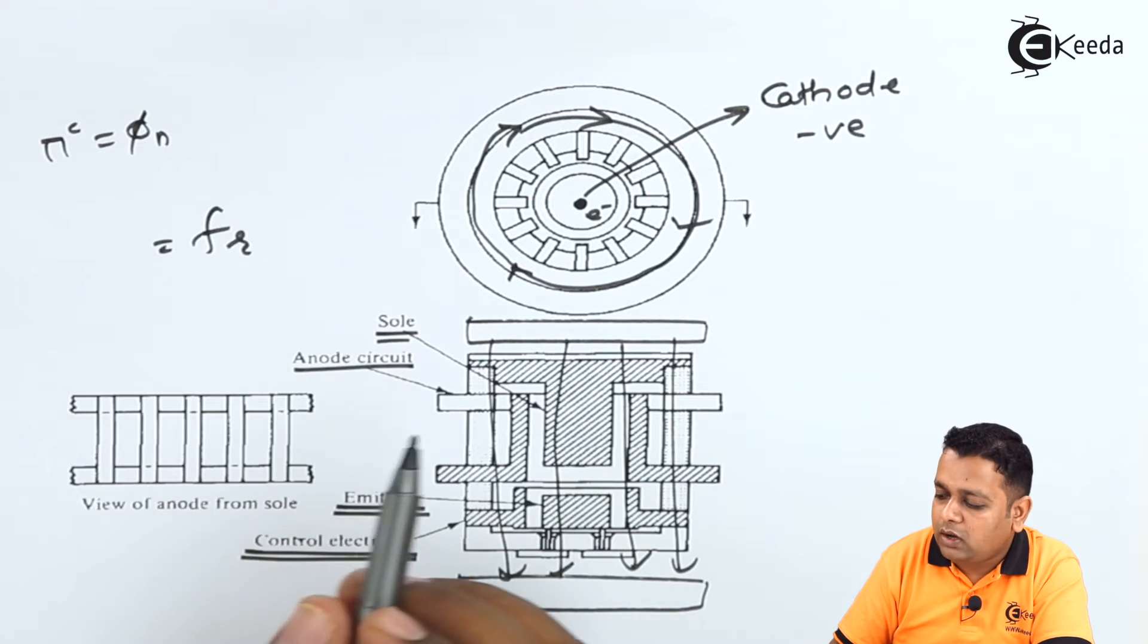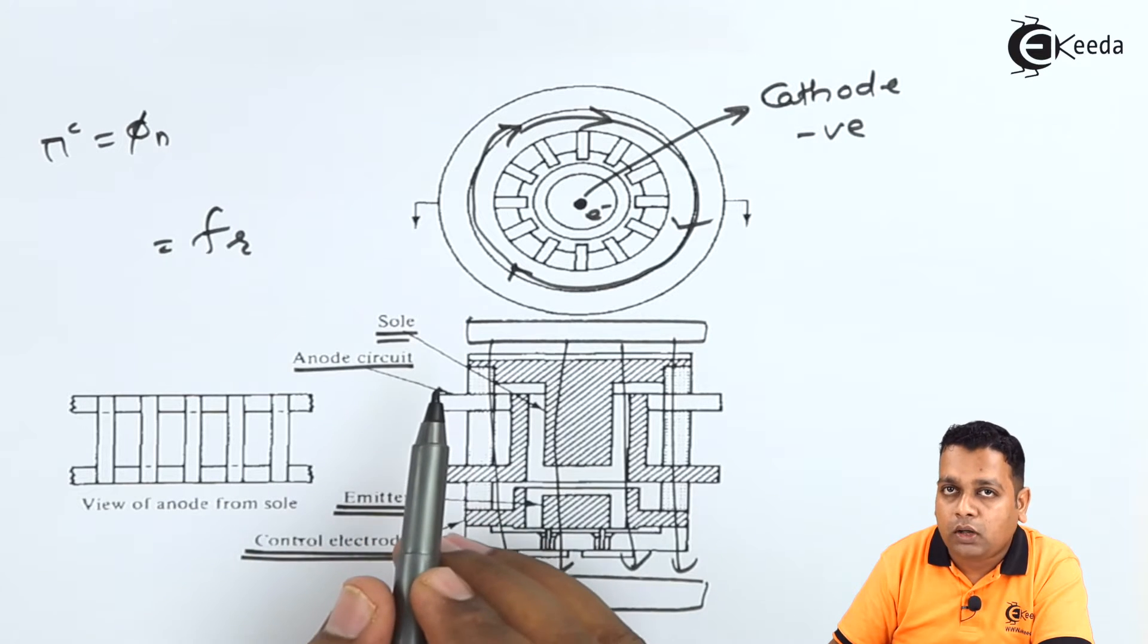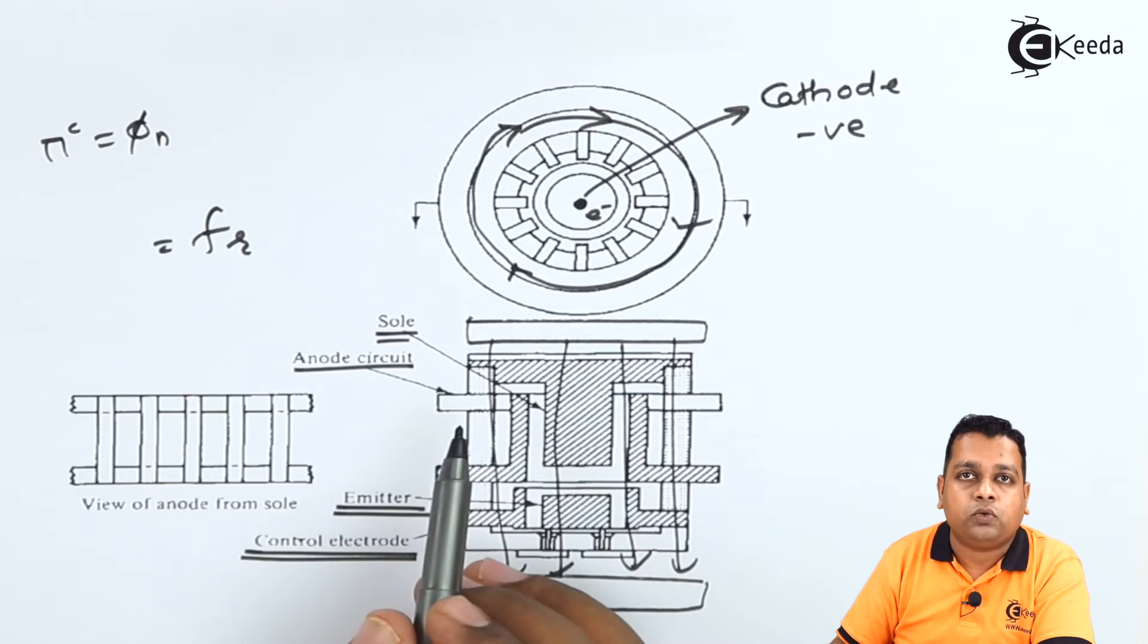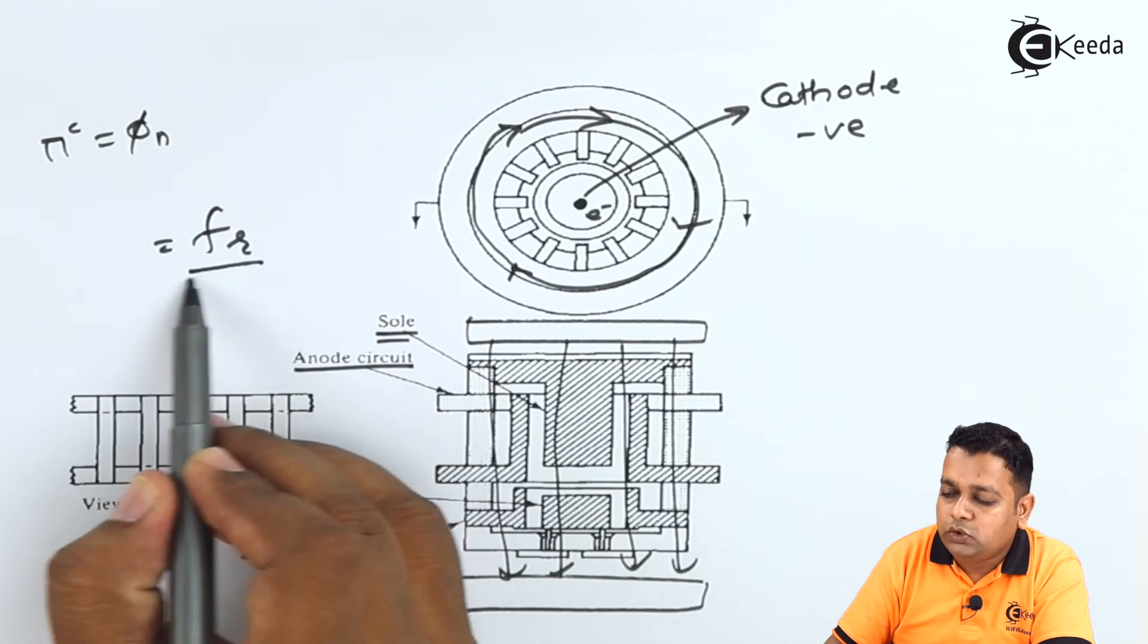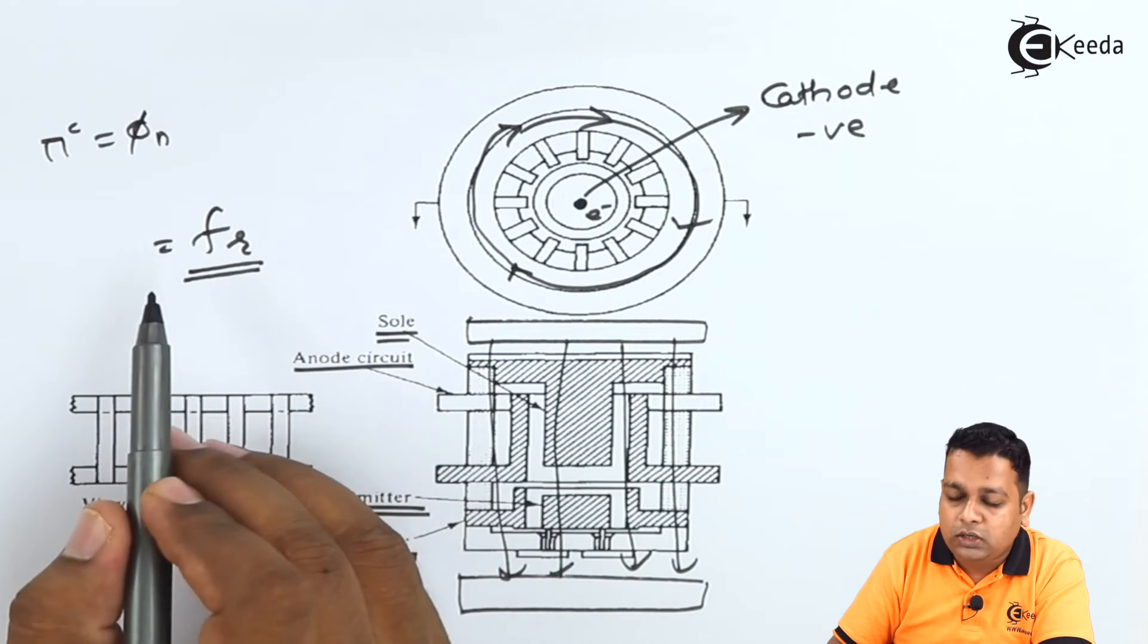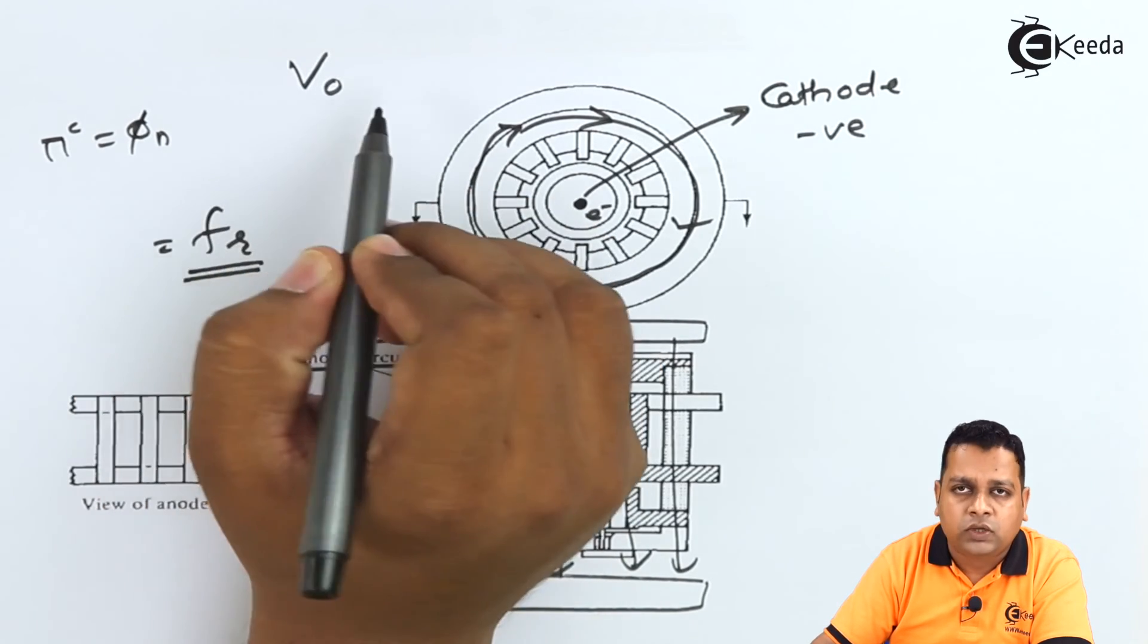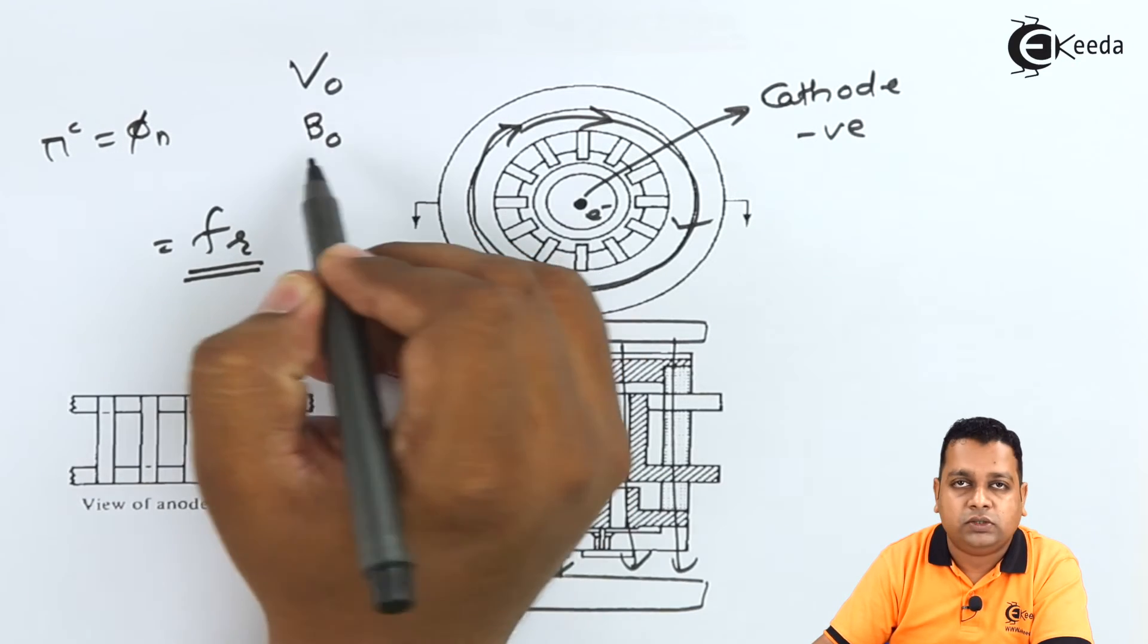They are not allowed to hit on to the anode circuitry but just to get rotations there. So therefore the frequency of oscillation is totally controlled because of the applied potential in general V0 to the anode and the magnetic flux density B0.